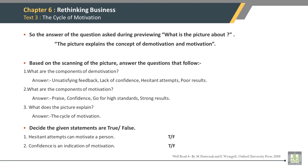What does the picture explain? The answer is: the cycle of motivation. Decide whether the given statements are true or false. Statement: Hesitant attempts can motivate a person. This is a false statement. Statement: Confidence is an indication of motivation. This is a true statement.